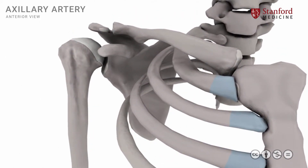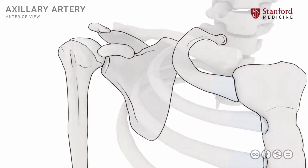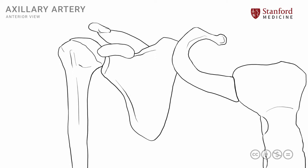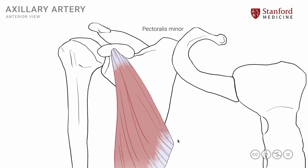Let's convert this into a simple line drawing. We have the scapula and the humerus in place along with the first rib and the sternum. A very important muscle to understand the axillary artery is the pectoralis minor muscle, which is shown here. The pectoralis minor muscle is attached to the coracoid process and then it extends onto some of the upper ribs on the chest wall.